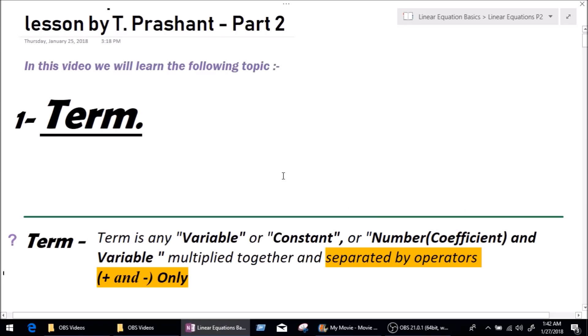The answer is as simple as it could be. Term is any variable or constant or coefficient multiplied by a variable together. So, those three names are actually terms. But, this definition has a hidden meaning. And that meaning lies in the part where it says, separated by operators plus and minus only.